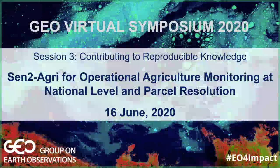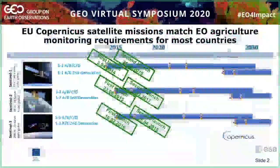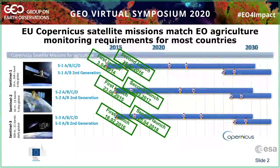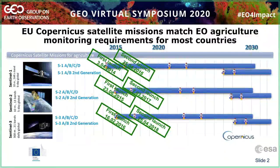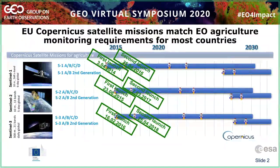Before I introduce you to this system, I will take a few minutes to draw the context and explain how the Sentinel time series from the Copernicus program have completely changed the game for agriculture. The first reason is certainly the fact that Sentinel-1 and Sentinel-2 time series really match the requirements of agriculture in terms of spatial resolution. The 10 meters of Sentinel-2 is really key for applications at the parcel level, and the revisit of five days with Sentinel-2 and six days with Sentinel-1 allows very dense time series to follow the growing cycle of crops and identify key phenological dates.